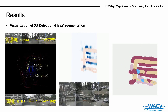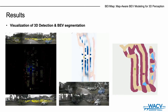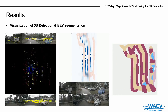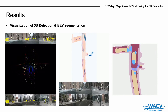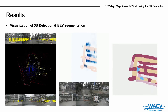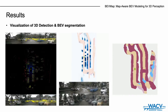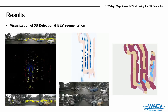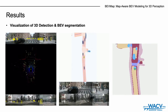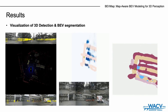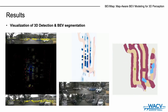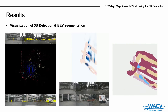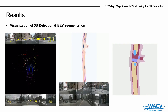We validate BEVMAP's performance in 3D detection, vehicle, and map segmentation tasks. These are example visualizations of those tasks. We show that BEVMAP produces robust BEV features and outperforms existing camera-based approaches in BEV modeling. Thank you for listening.